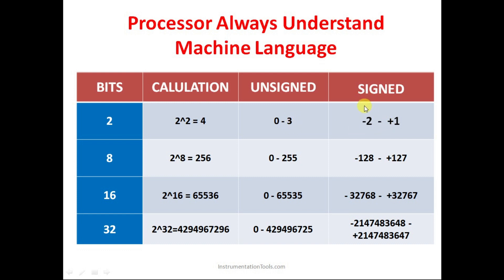If we take 8 bits, how many values can be represented? Two to the power 8 is 256. In case of unsigned integers, all positive values including zero are represented, so we can go from 0 to 255 — because 256 total values can be represented, and 0 counts as one, leaving 255 more values.